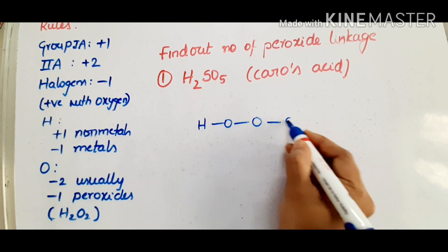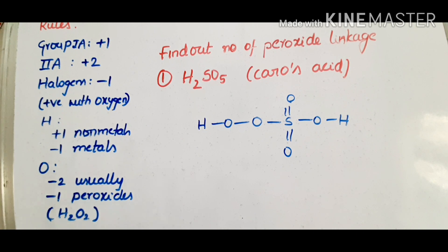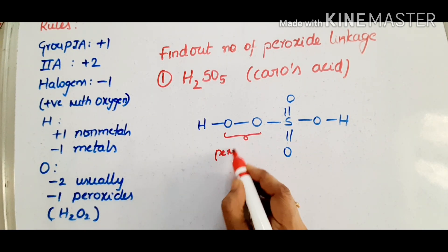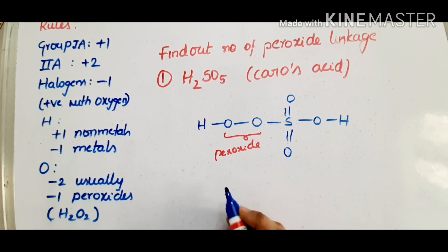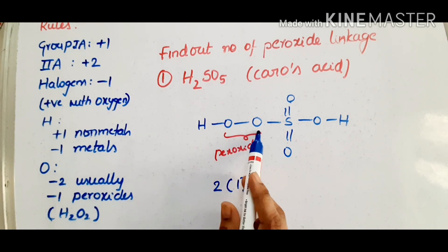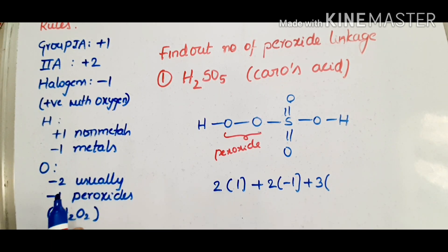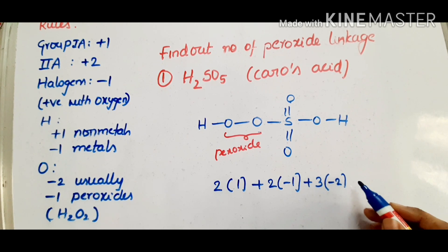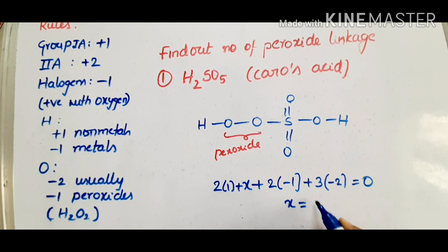So sulfur has a maximum oxidation state of plus 6. In H2SO5, there is one peroxide linkage, and for the peroxide oxygen the oxidation number is minus 1. So we set up: 2 times 1 (for H) plus x (for S) plus peroxide linkage oxygen (2 times minus 1) plus remaining oxygens (times minus 2) equals 0.